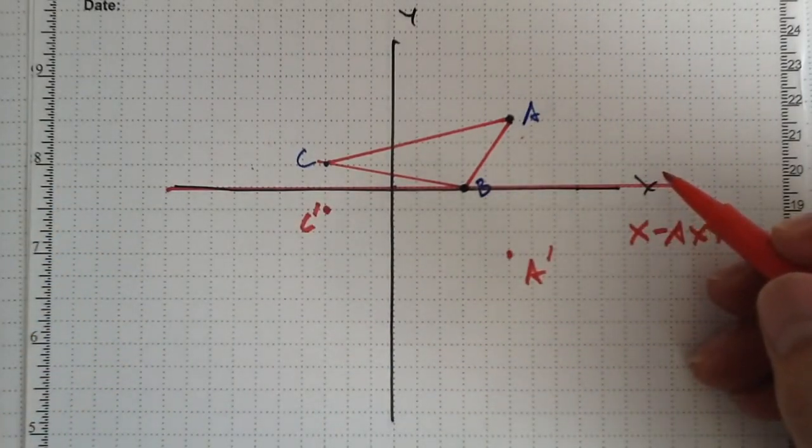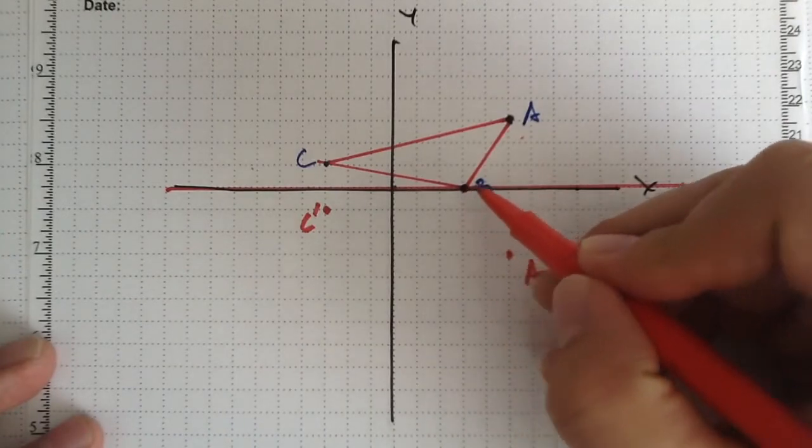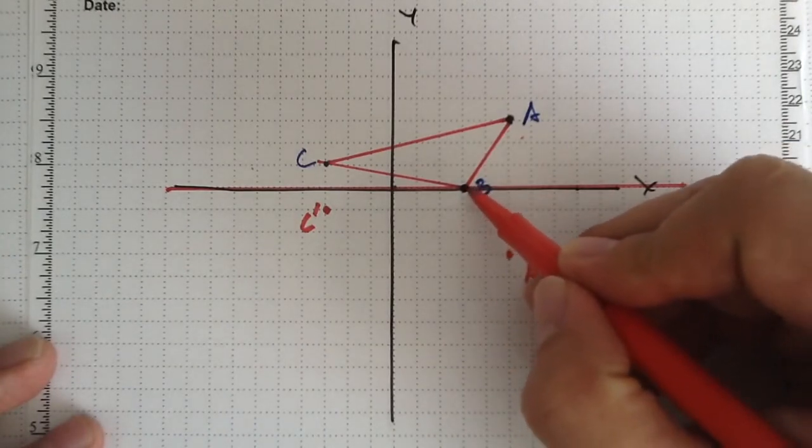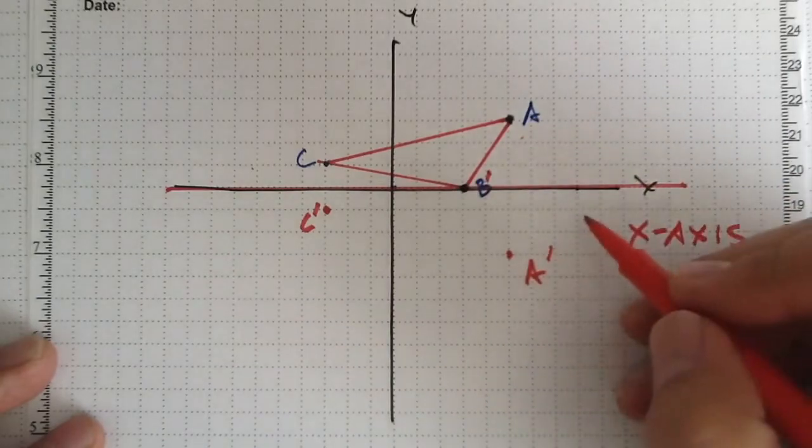And then this sometimes happens as well, which is that, in this case, B is on the line of reflection itself. So it really doesn't go anywhere. It's zero units away from the line of reflection, so B and B prime are the same thing.